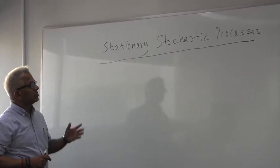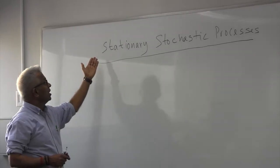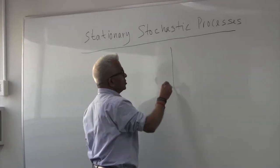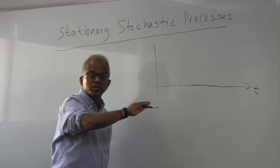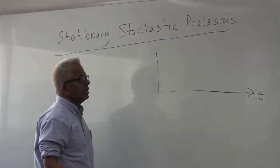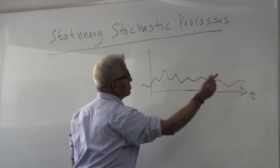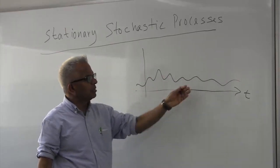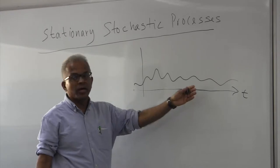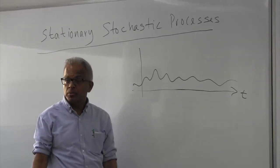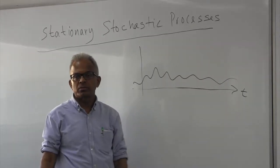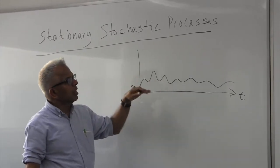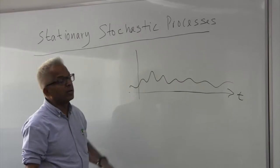Let me start talking about stochastic processes, and in particular stationary stochastic processes. Unlike a random variable where things are all in retrospective time and there is a realization, generally what happens is you have one function of time, and if you only have this one function of time then it is a deterministic process — that is the way things evolve. In the case of stochastic processes, this evolution could be from a collection of different realizations.